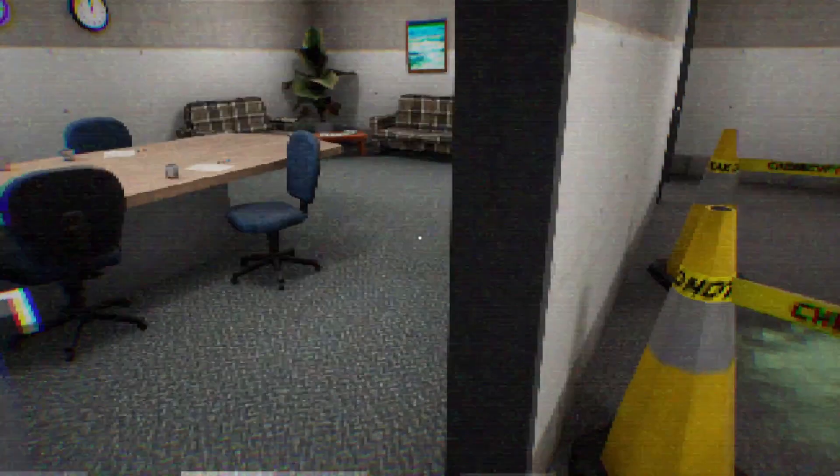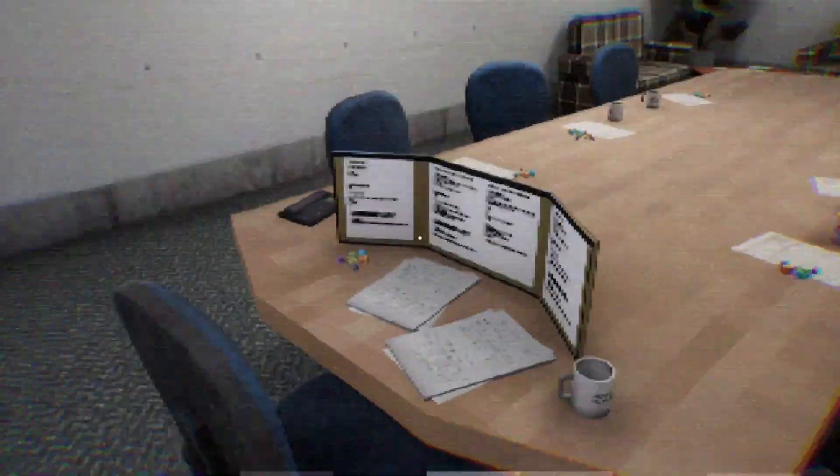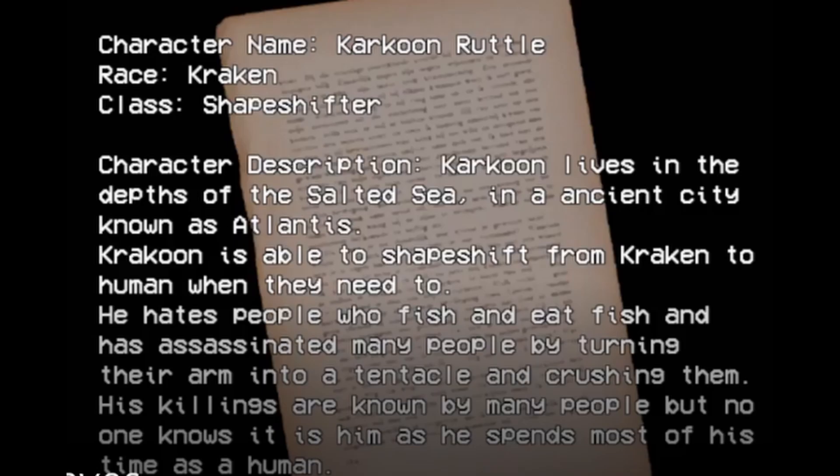This may appear as comical even, that an alert was sounded for microwaving fish. And perhaps humor is being used as a guise here. Because once you make it to the meeting room of the same area, a D&D session is being played. But what's very interesting is one of the characters on the D&D board. Krakoon. Race: Kraken. Class: Shapeshifter. Krakoon lives in the depths of the salted sea in an ancient city known as Atlantis. Krakoon is able to shapeshift from Kraken to human whenever they need to. He hates people who fish and eat fish, and has assassinated many people by turning their arms into a tentacle and crushing them. His killings are known by many people, but no one knows it is him as he spends most of his time as a human.